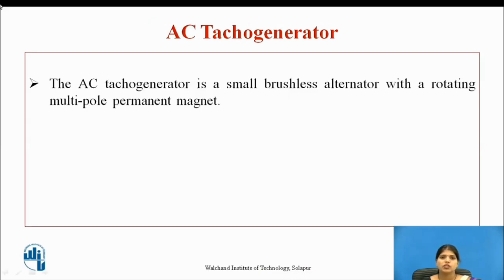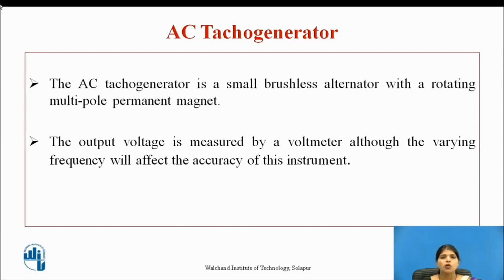The AC tachogenerator is a small brushless alternator with a rotating multipole permanent magnet. In the AC tachogenerator, the armature is provided with an AC winding, either single phase or three phase windings. The output voltage is measured by a voltmeter, although the varying frequency will affect the accuracy of this instrument.